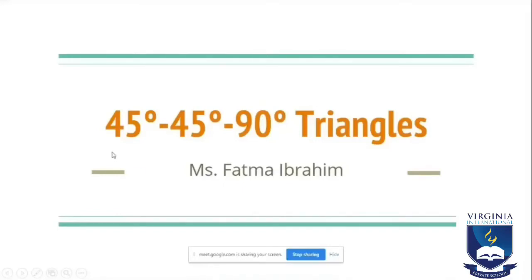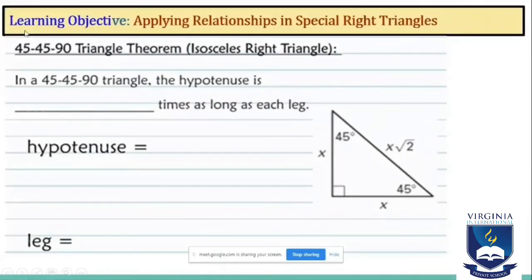Our lesson today is about 45-45-90 triangles. Learning Objective: Applying Relationships in Special Right Triangles. The 45-45-90 Triangle Theorem for isosceles right triangles states that in a 45-45-90 triangle, the hypotenuse is the square root of 2 times as long as each leg. Hypotenuse equals x square root of 2, and the leg equals x.